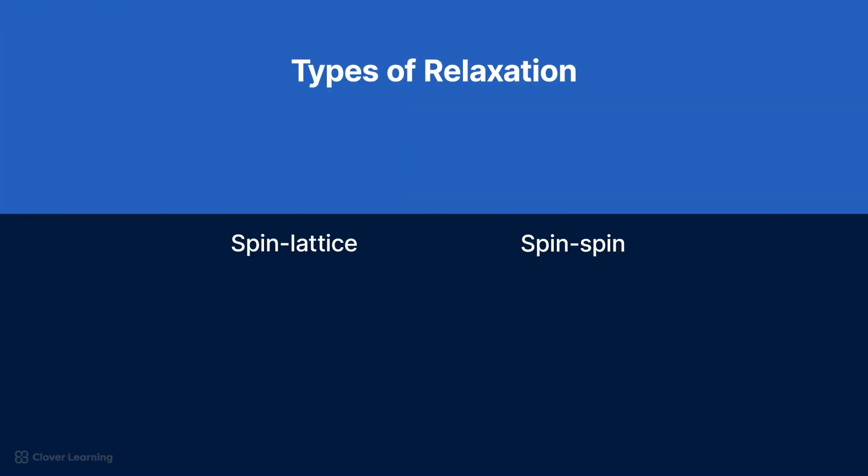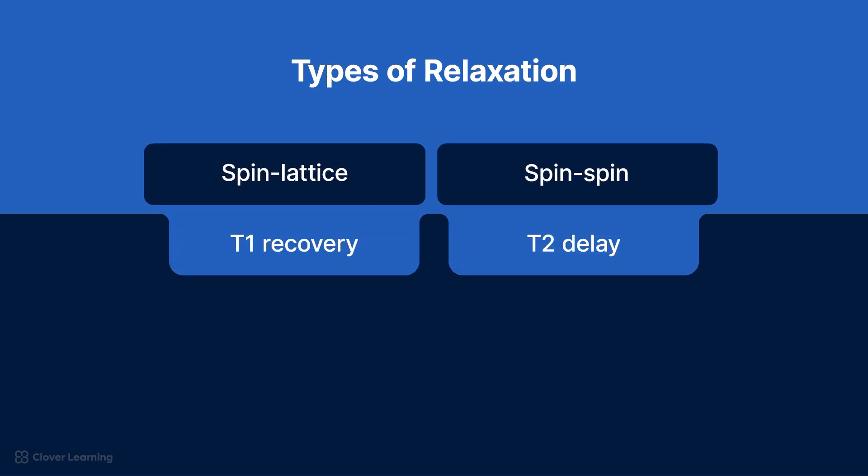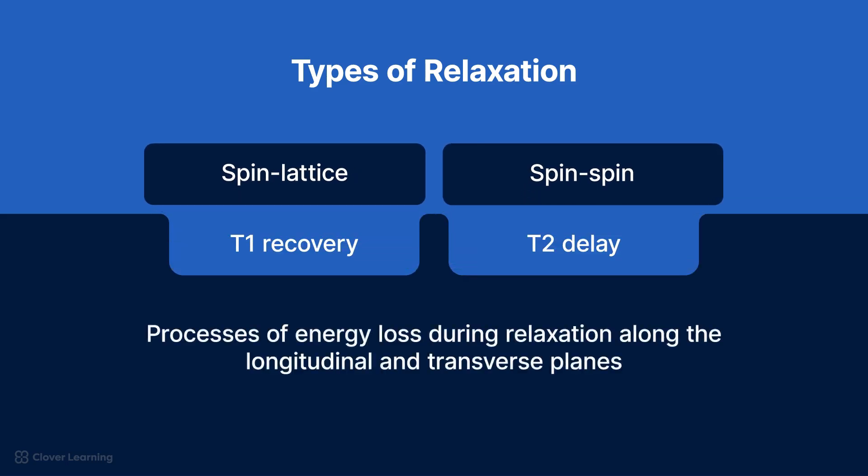There are two types of relaxation that occur during magnetic resonance imaging, spin-lattice and spin-spin. These types of relaxation are synonymous with T1 recovery and T2 decay, which are the processes of energy loss during relaxation along the longitudinal and transverse planes. It is important to note that these two types of relaxation happen simultaneously but independently of each other.